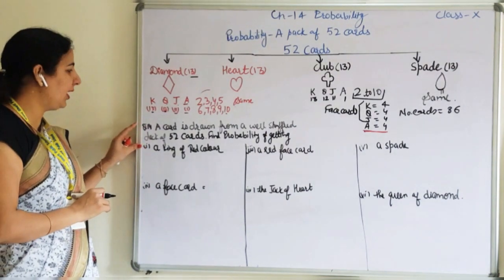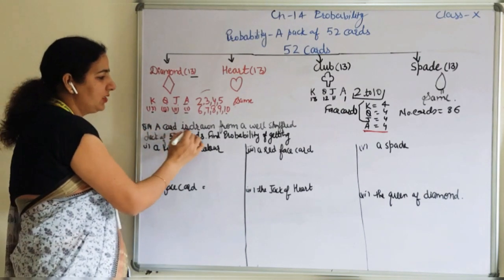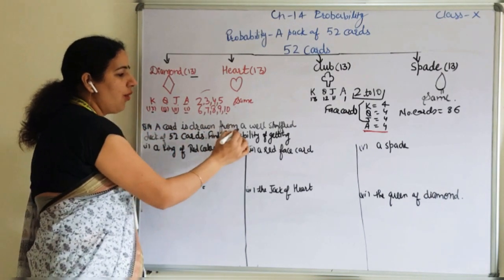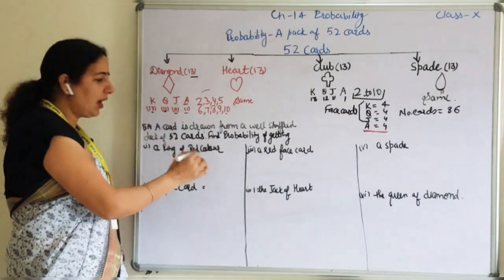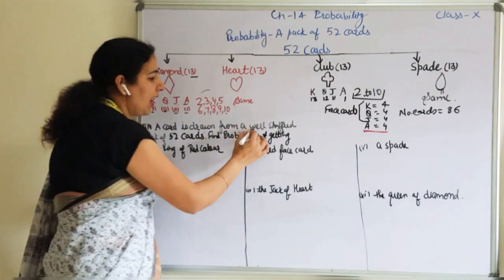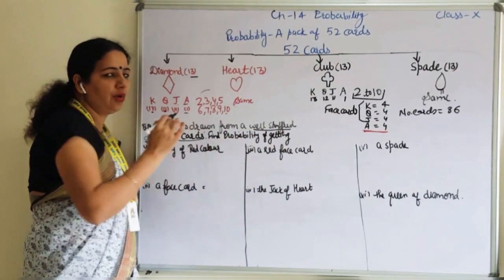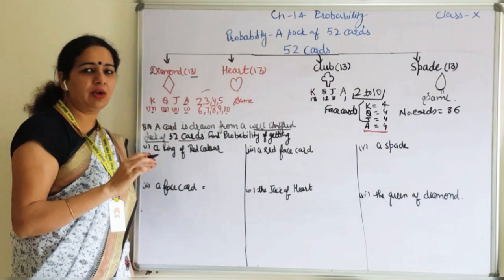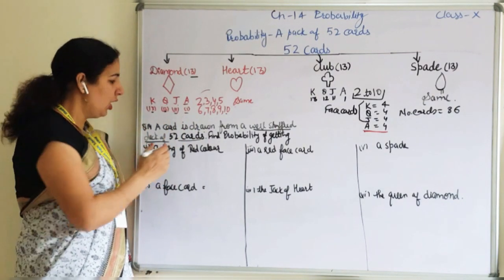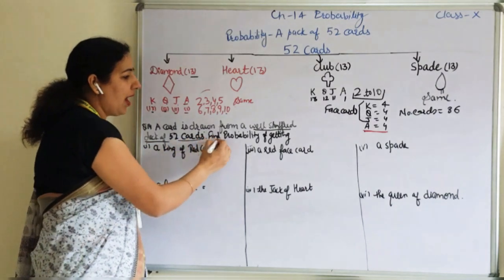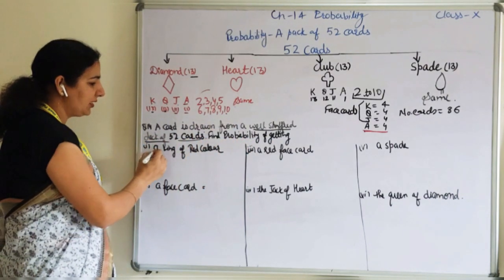I have taken one question from your NCERT. A card is drawn from a well-shuffled pack of 52 cards. This line is very necessary to write because we need to know how many cards are there — the next question just has five cards chosen.